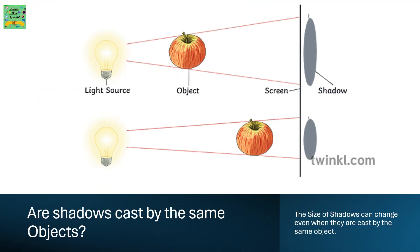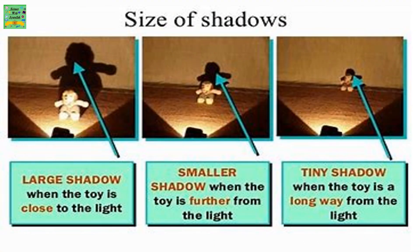Are shadows cast by the same object always the same size? The size of shadows can change even when they are cast by the same object. A large shadow is formed when the toy is close to the light. A smaller shadow is formed when the toy is further away from the light. A tiny shadow is formed when the toy is kept a long way from the light.